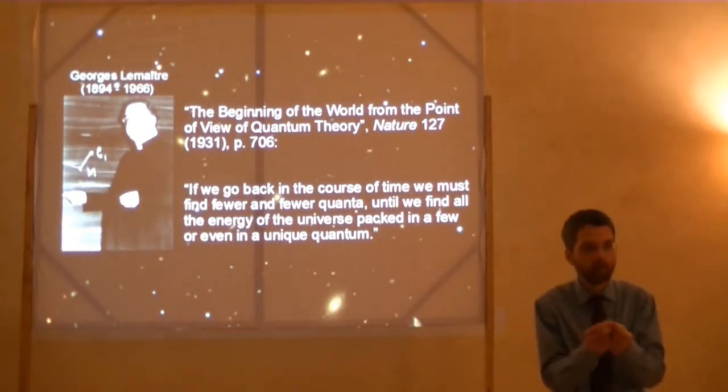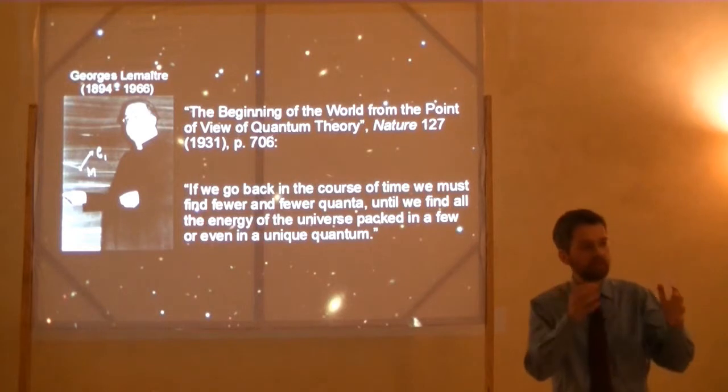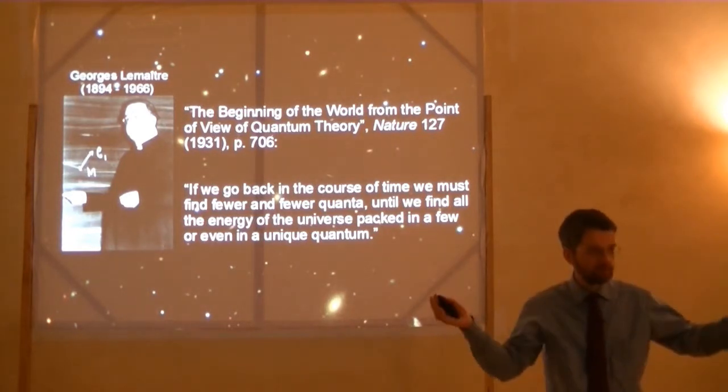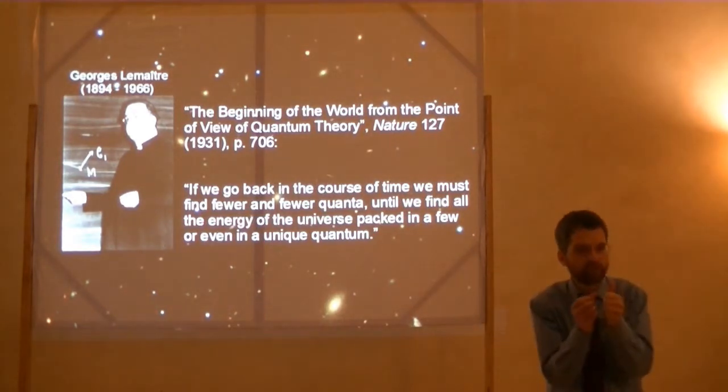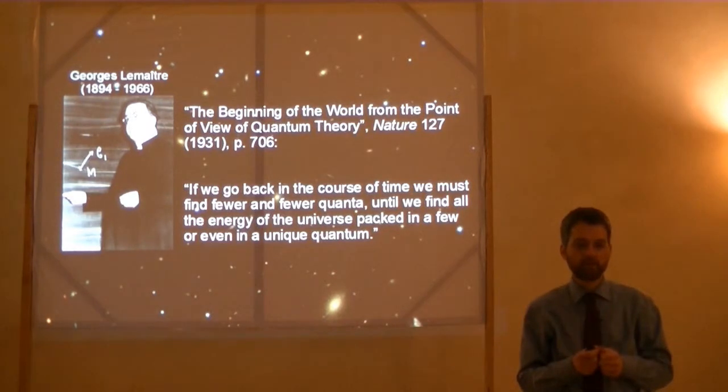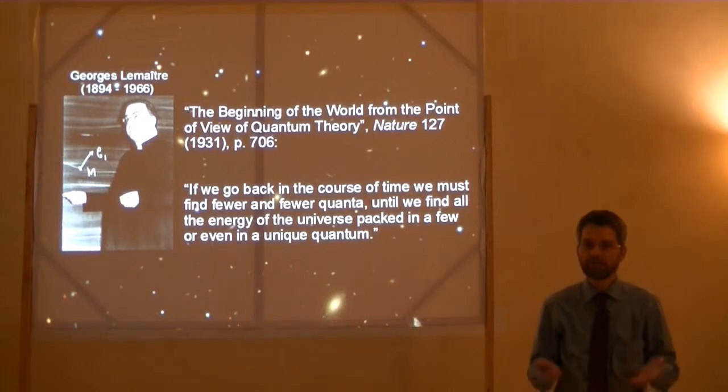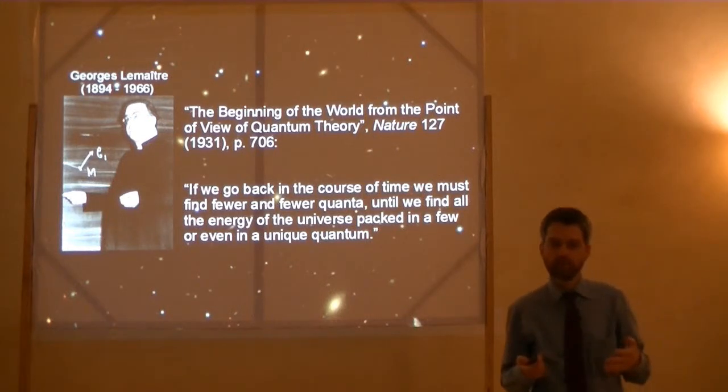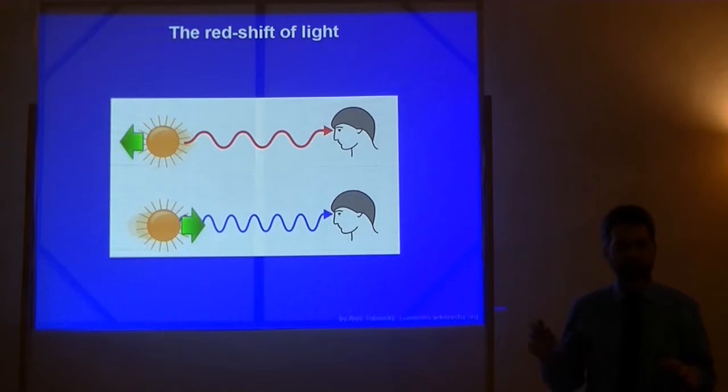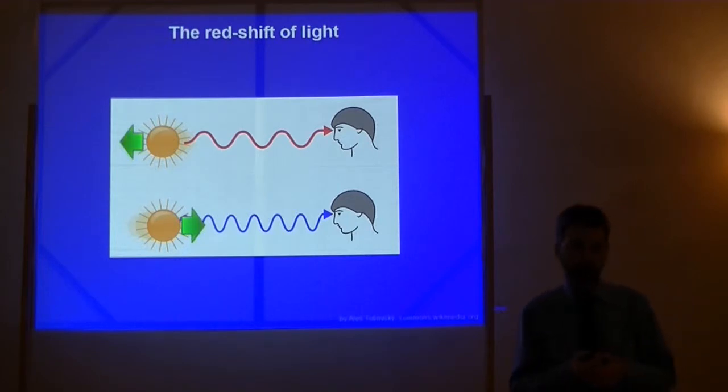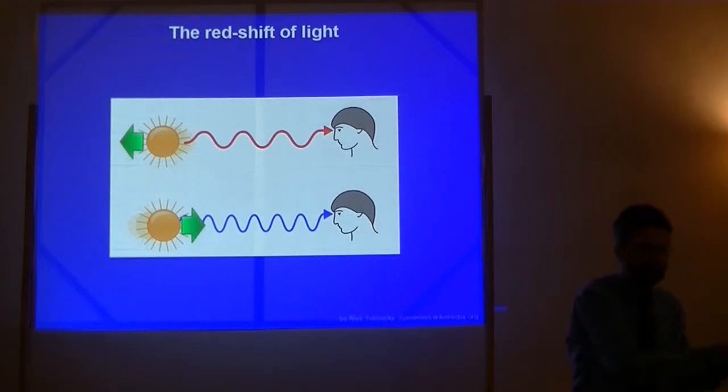Until we find all the energy of the universe packed in a few or even in a unique quantum, in a primeval atom. The stars, moon, sun, all we see concentrated in one little atom. How did he come to such an idea, which is so against our intuition? He used as a basis this natural process, and extrapolated it very much, too much, as would seem reasonable. The process is the Doppler effect.